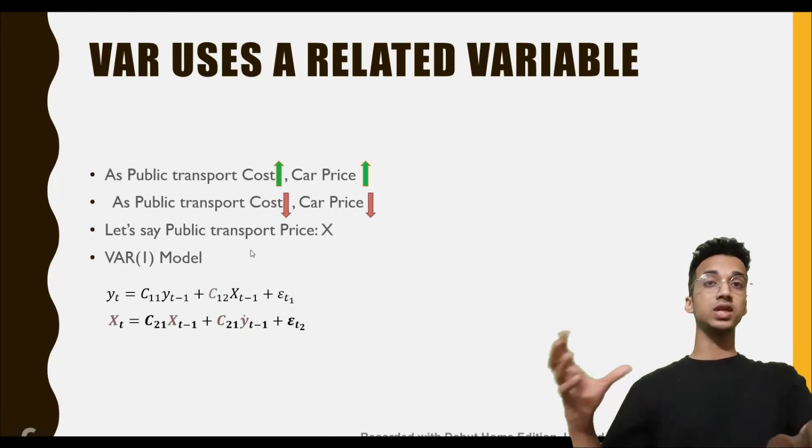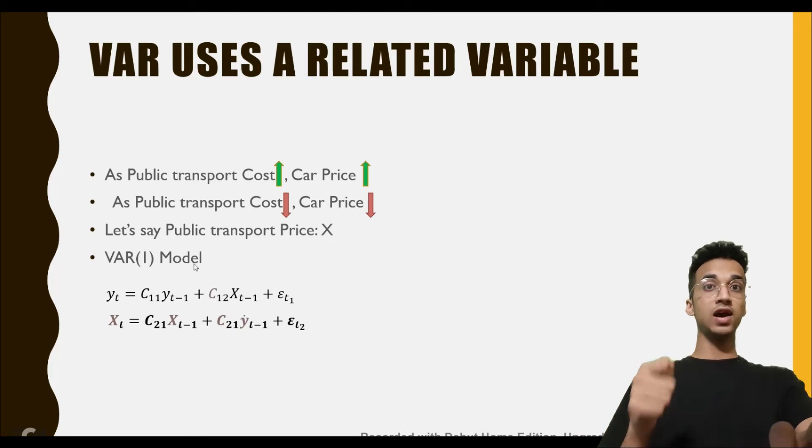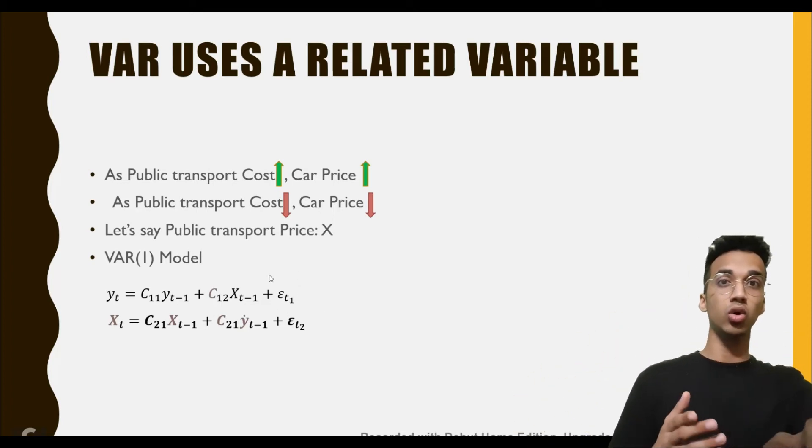Let's represent public transport price by x. Now your vector autoregression model would look like this. It's the same as autoregression, just instead of using only the value from the previous time period, you're also including the value of the other variable's previous time period. Since you're only using the value in the previous time period, this is a VAR of order 1. It can be extended to any order you want.